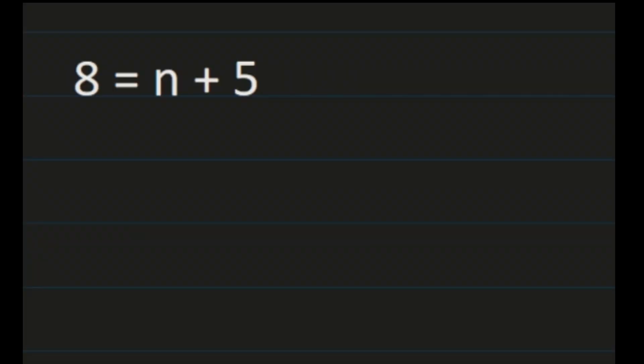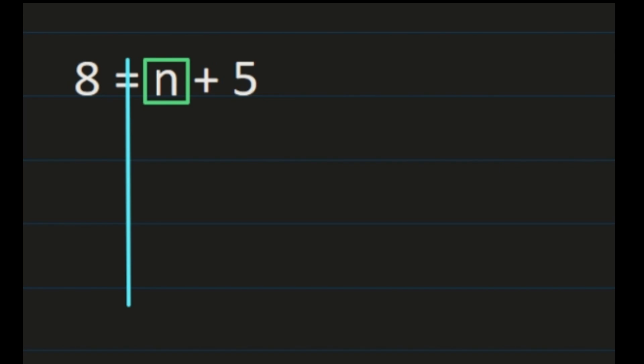For our second example, we have 8 equals n plus 5. We changed the variable to an n instead of an x — it does not matter, it's still your variable, it's still your unknown, and we put it on the right-hand side of the equation. That doesn't matter either, if we're thinking about the fact that the equal sign means that both sides have the same value. So again, I suggest that you start by boxing your n and putting a line down the center of your equation so that you can keep both sides equal.